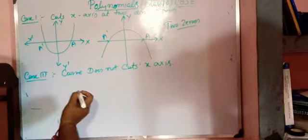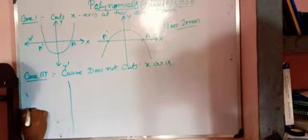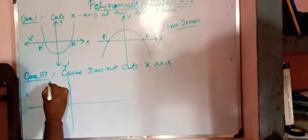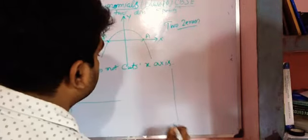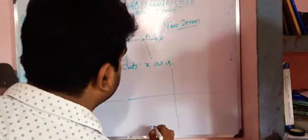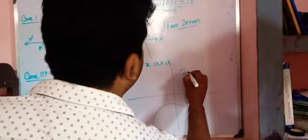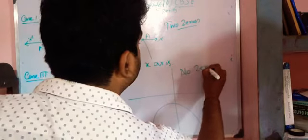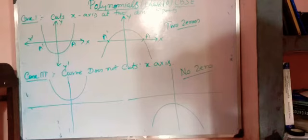In this case, the curve looks like this. And here, no zeros of the curve, as you can see.